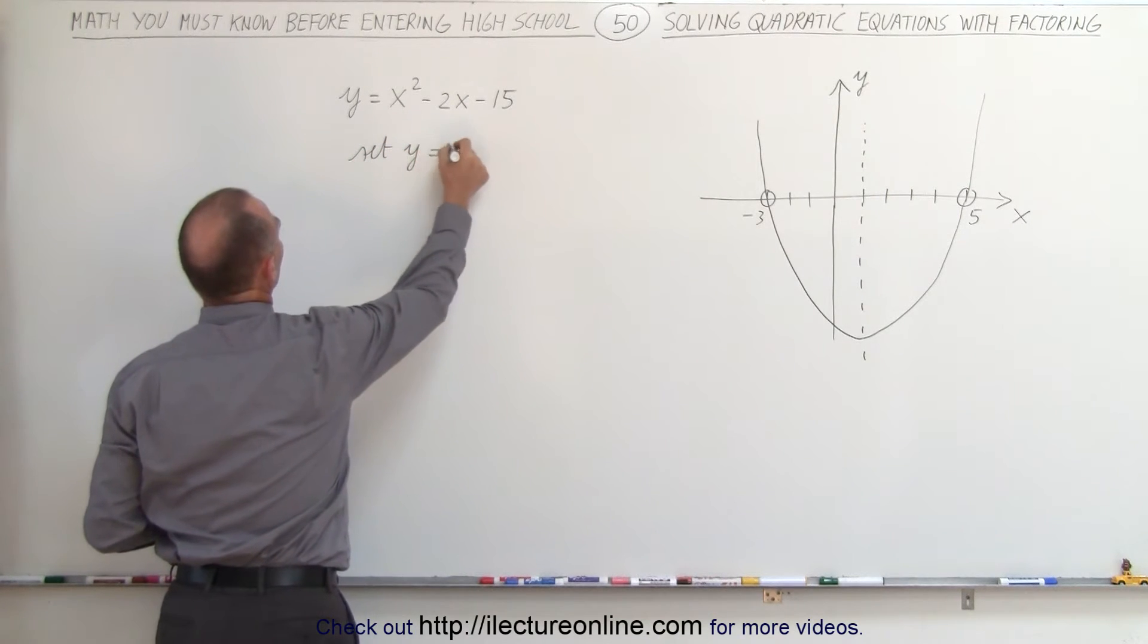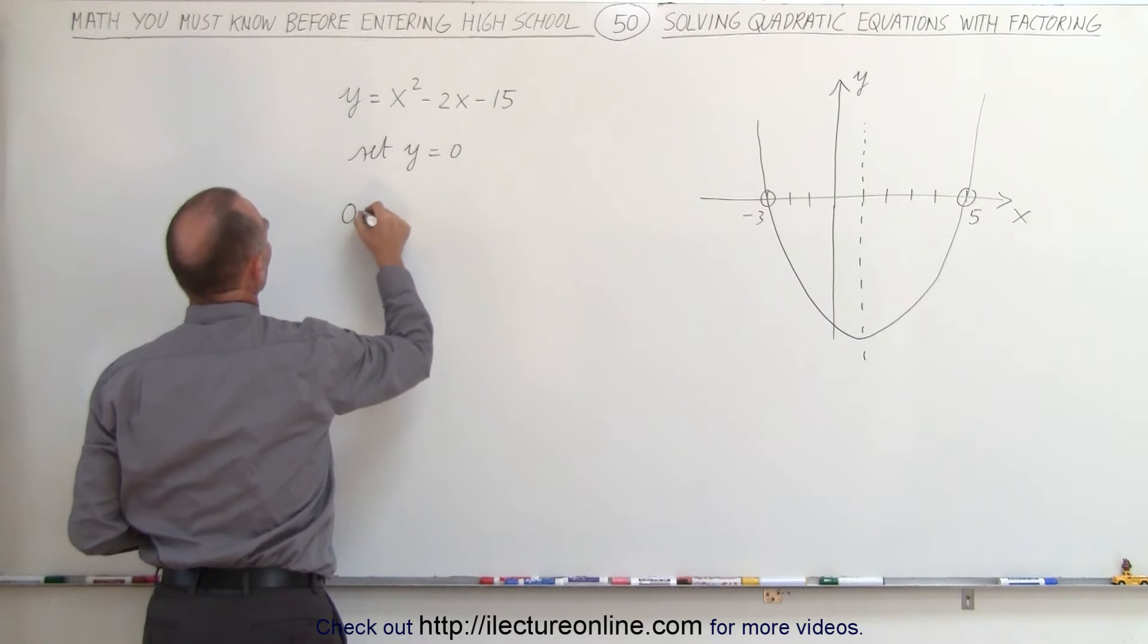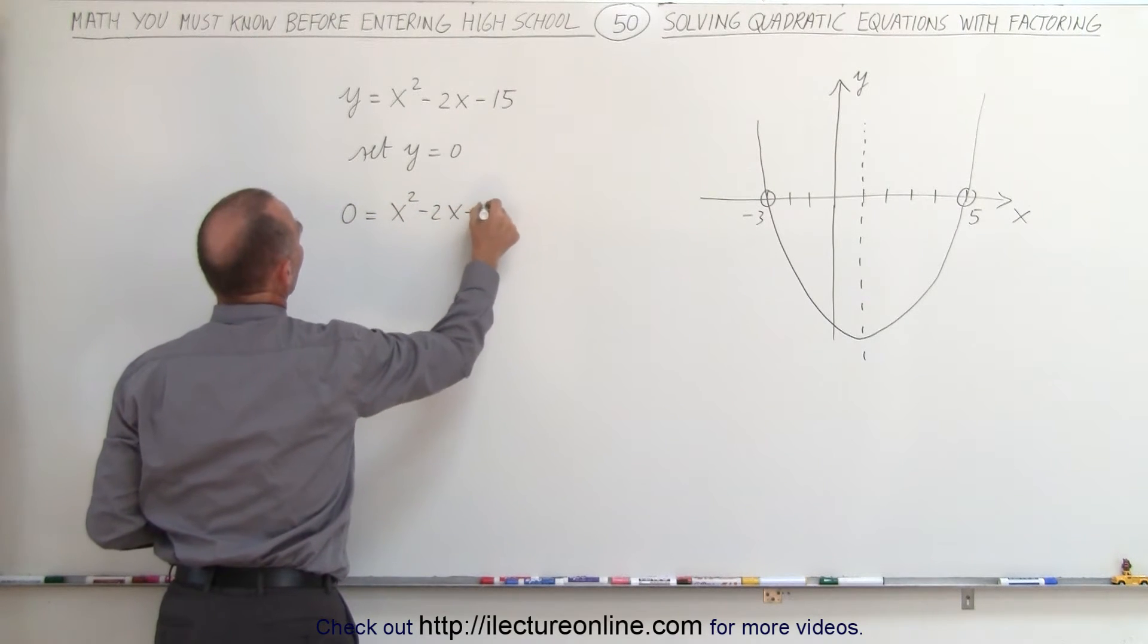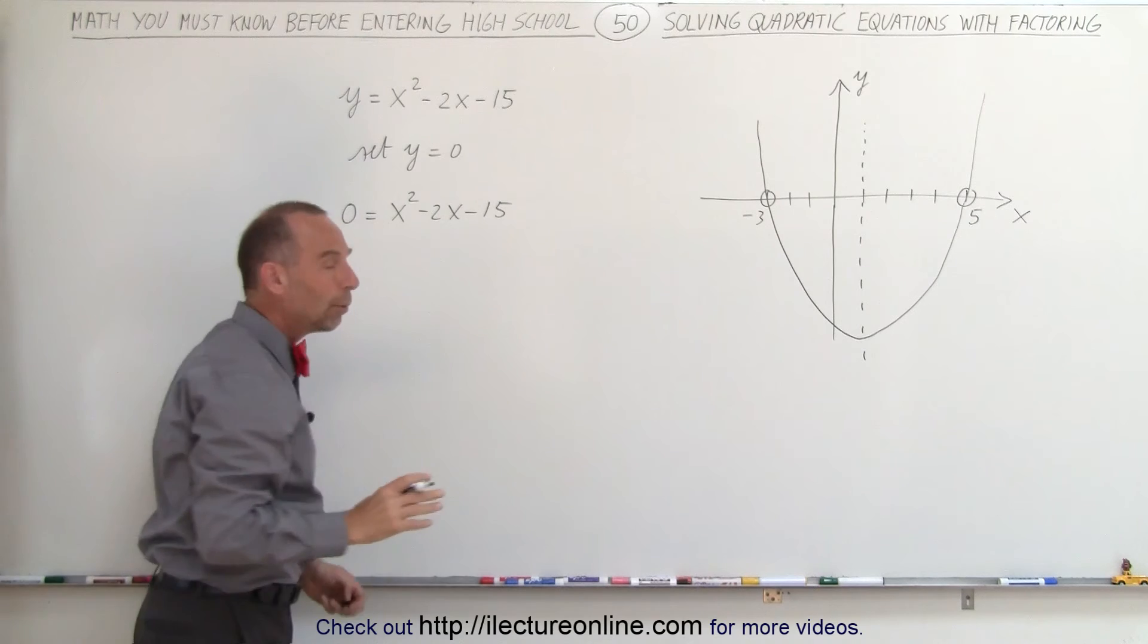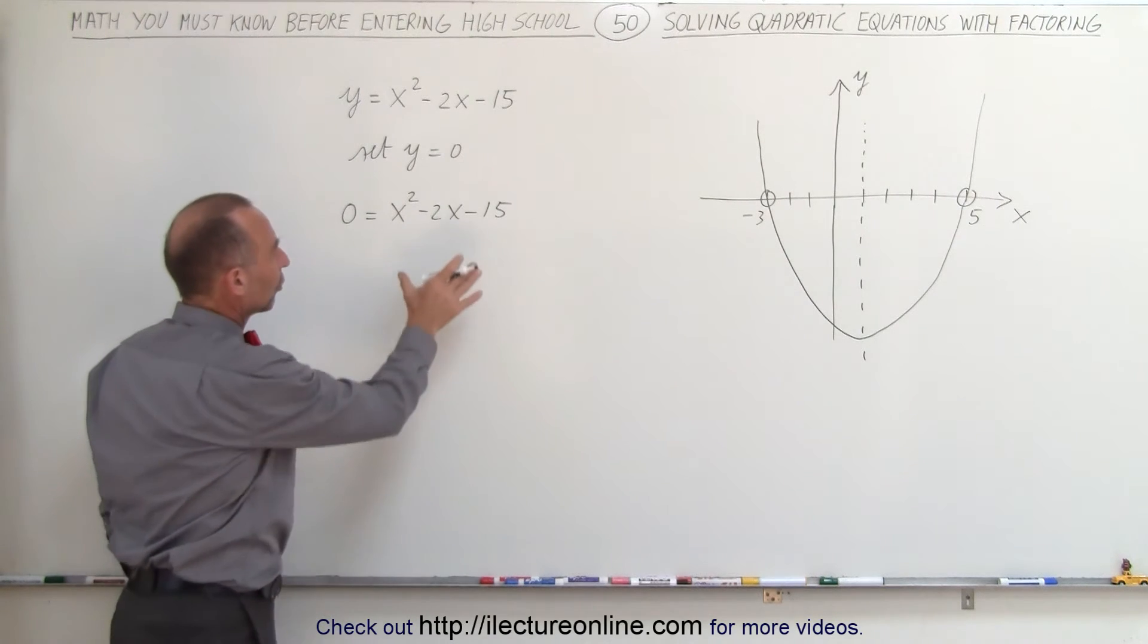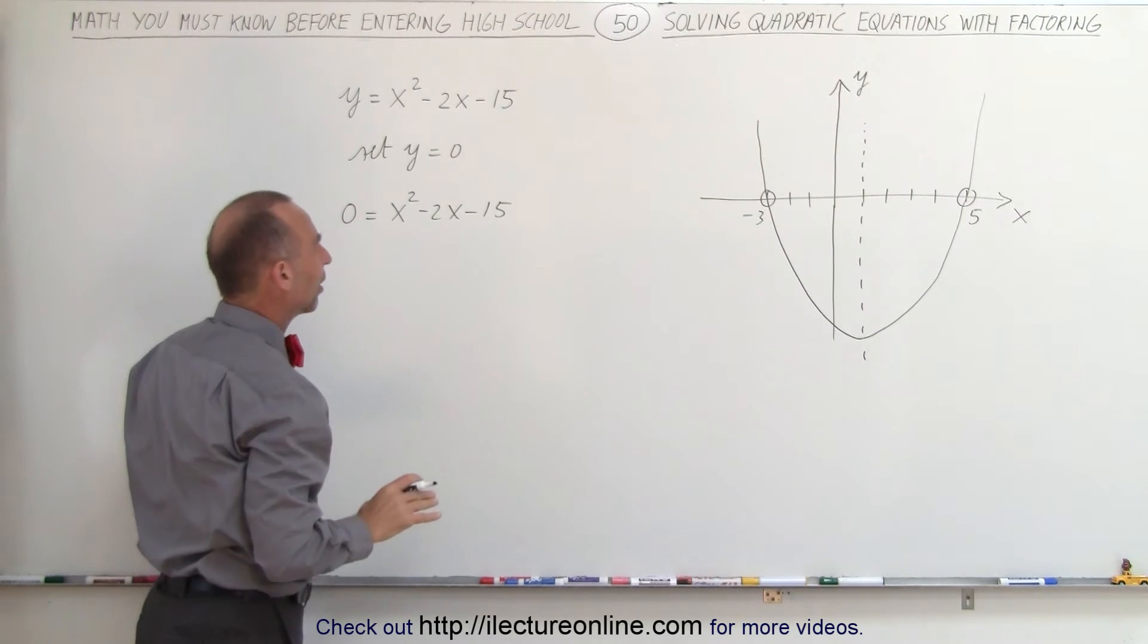Set y equal to 0 and we get 0 equals x squared minus 2x minus 15. What we're going to do now is factor the right side of this equation.